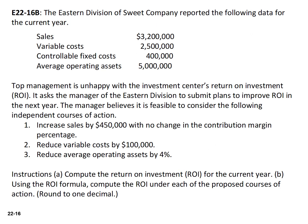When you calculate the contribution margin percentage, please round to two decimals. When you divide $3.2 million into $700,000, you'll arrive at 21.875 — use 21.88% as the contribution margin percentage. The solution to this exercise will be provided in the next video.